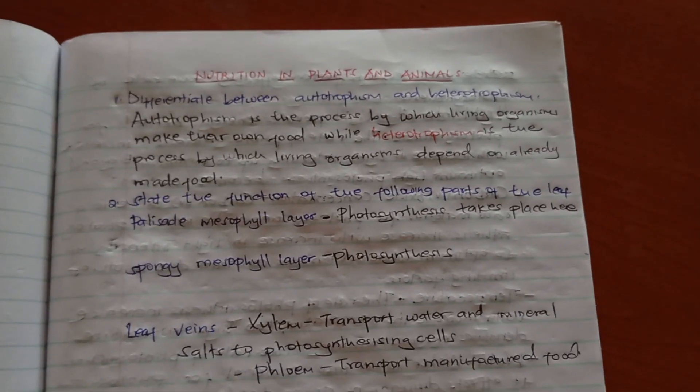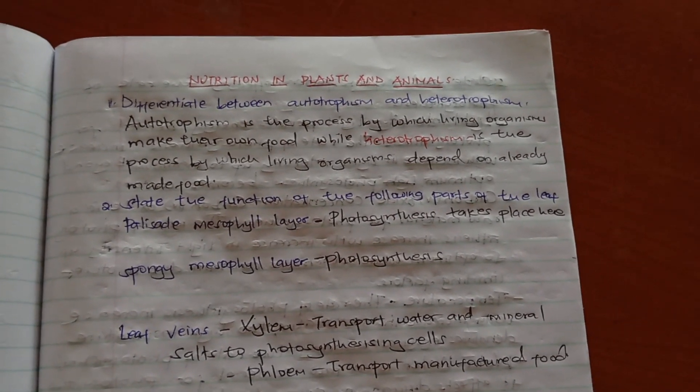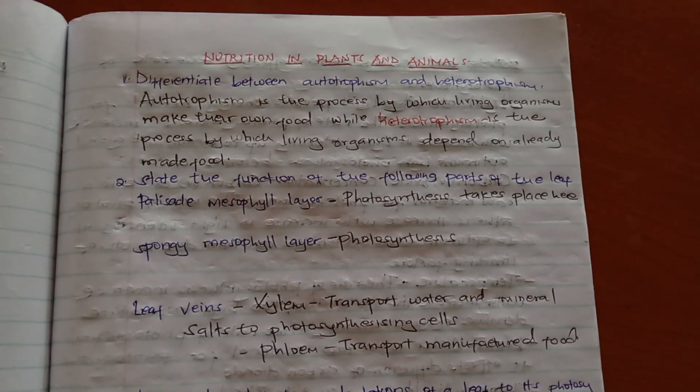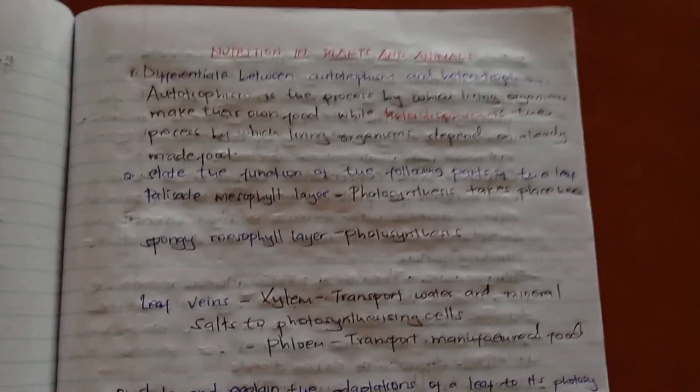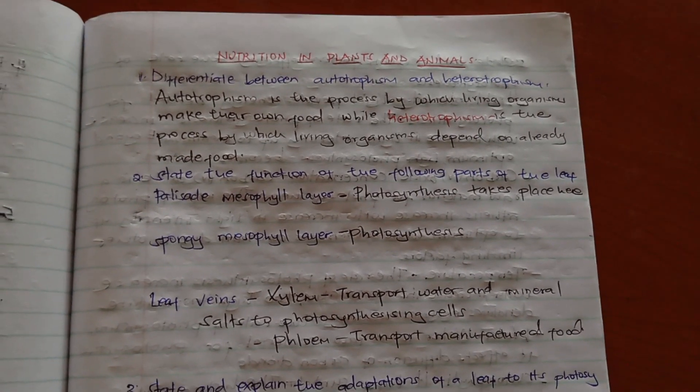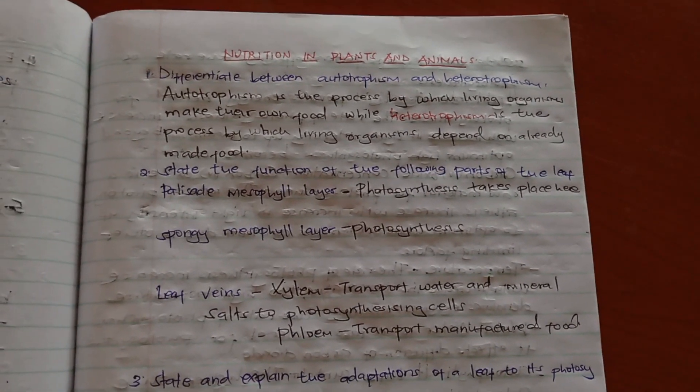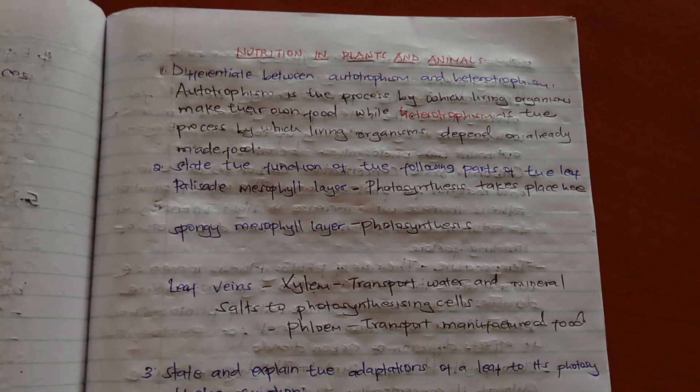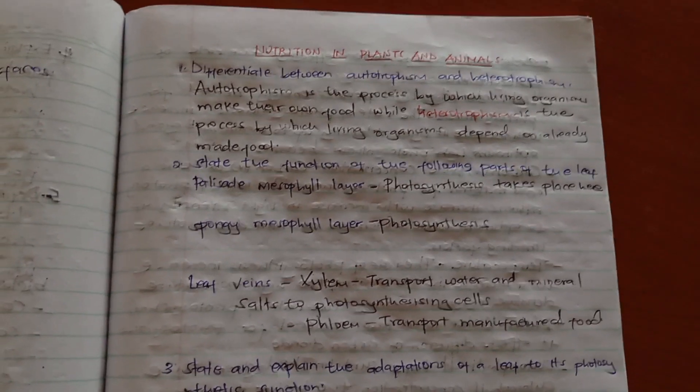Nutrition in animals. Differentiate between autotrophism and heterotrophism. Autotrophism is the process by which living organisms make their own food, while heterotrophism is the process by which living organisms depend on already made food, so they do not make food.